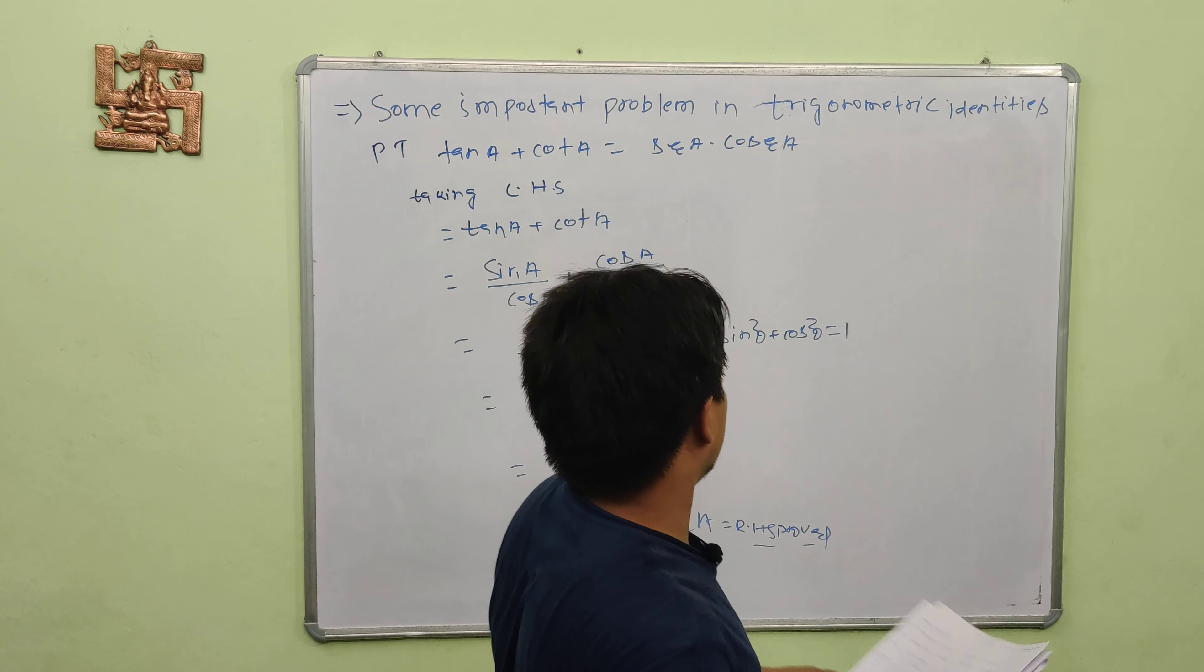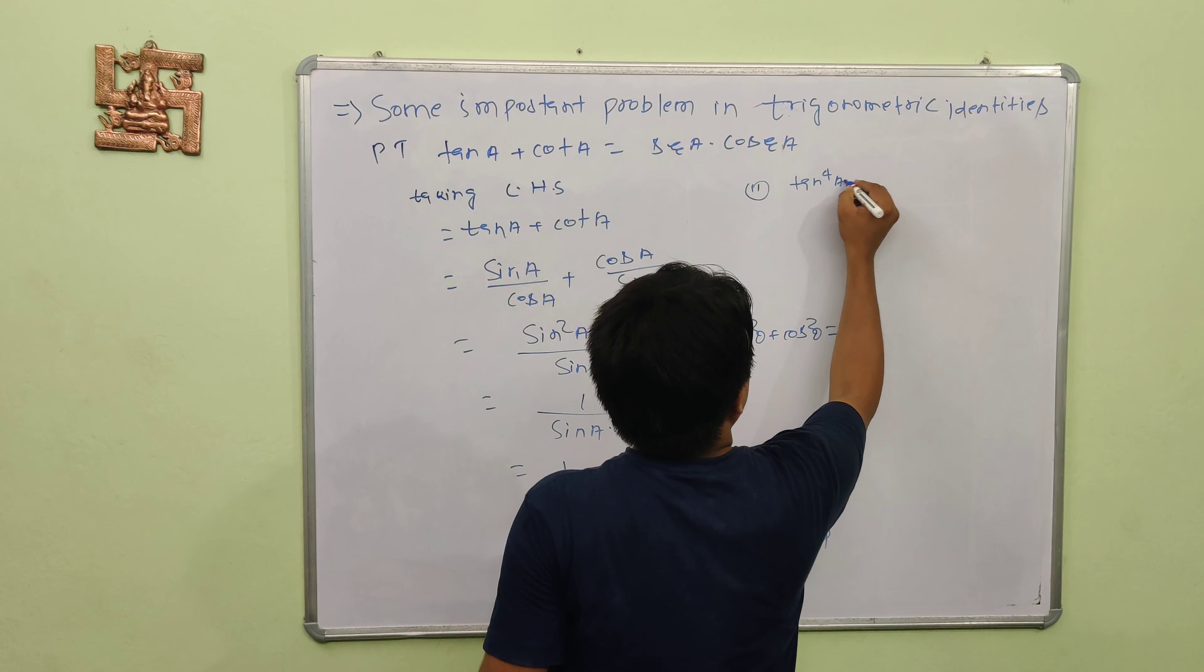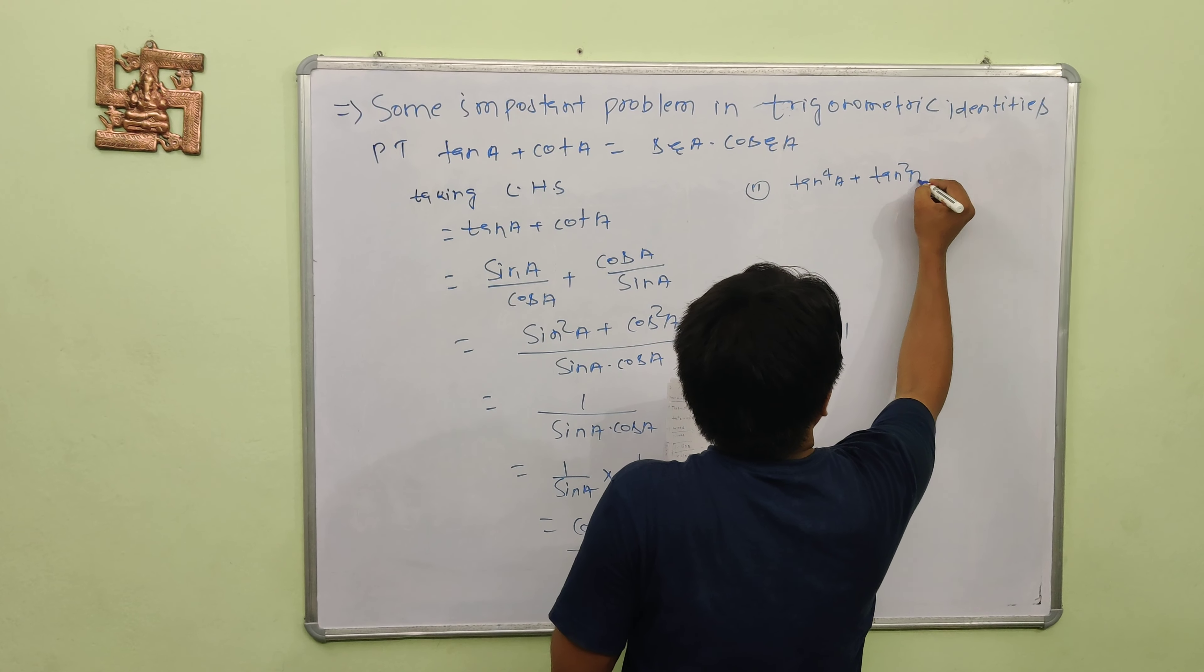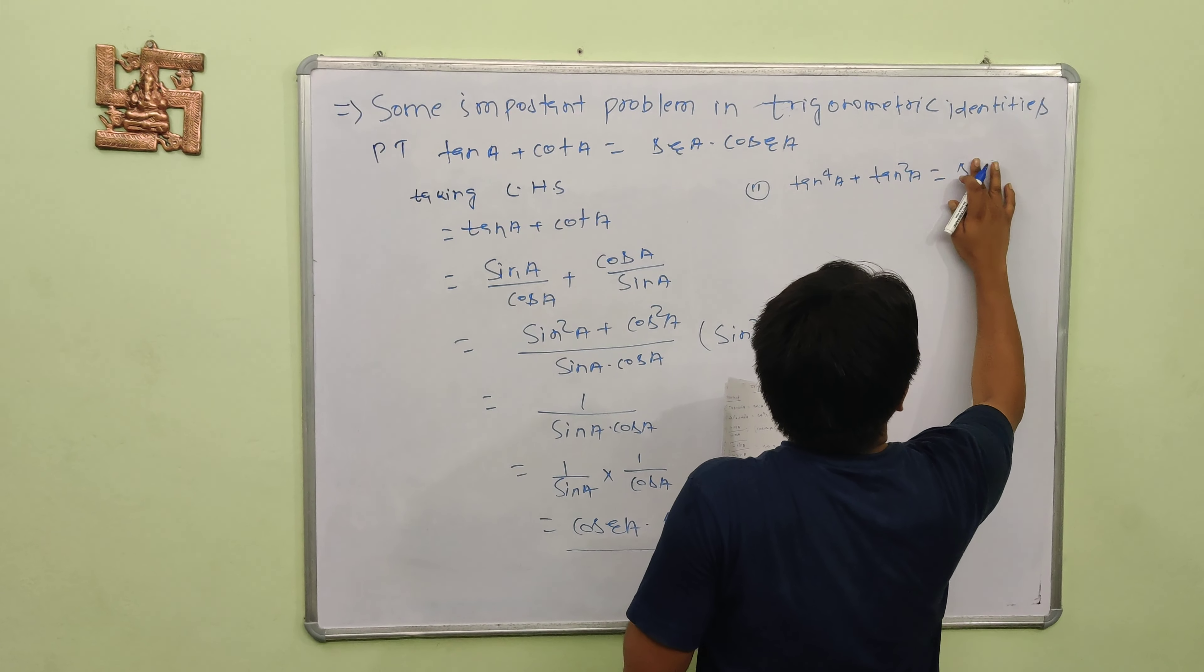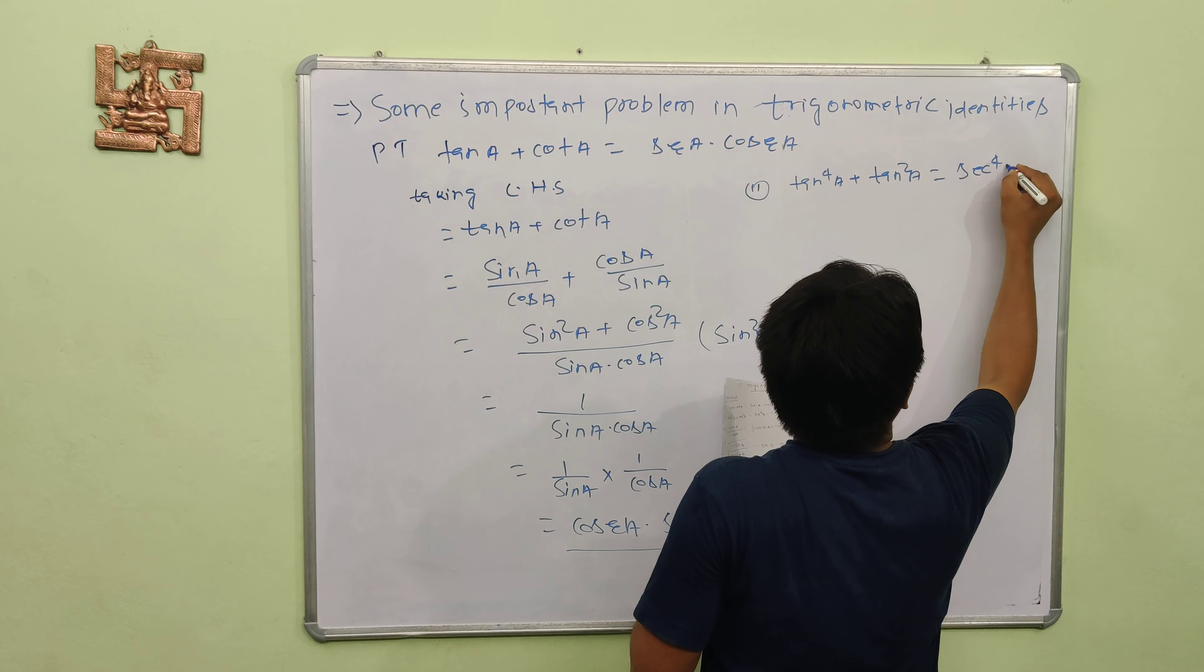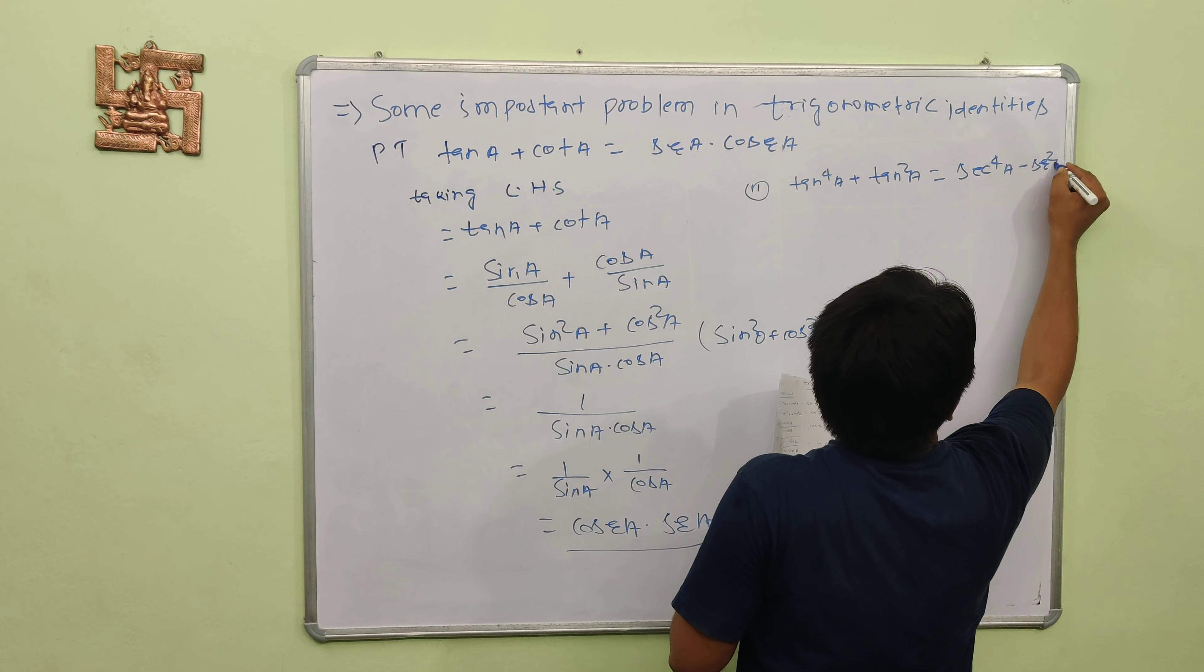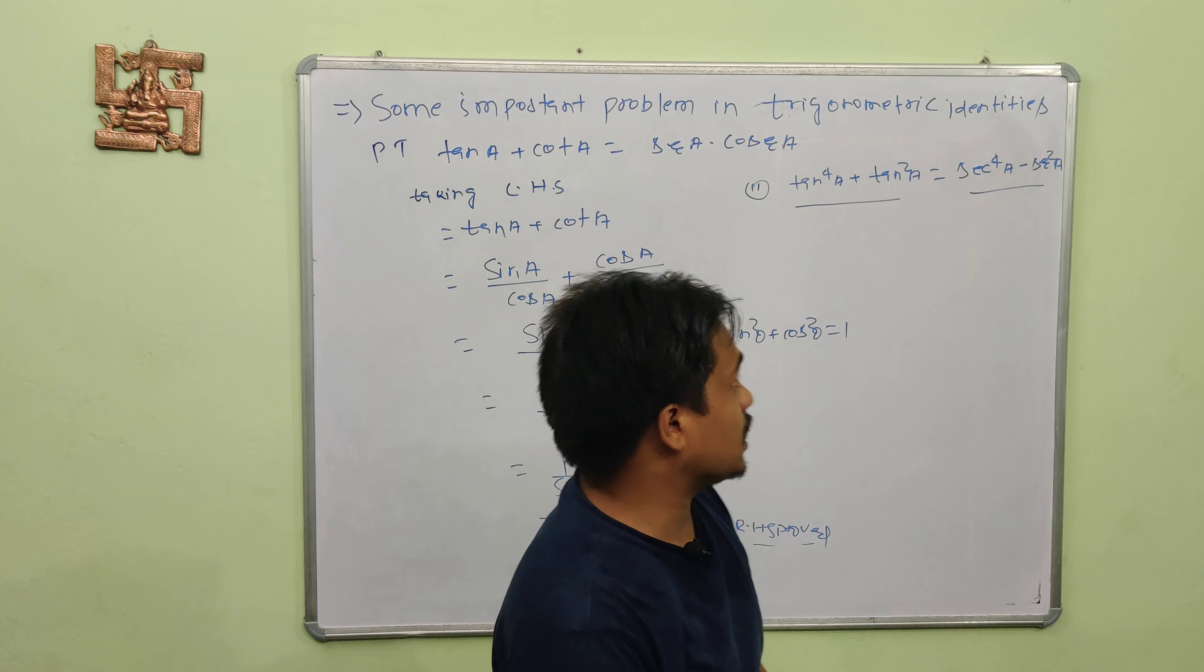Now the second question to prove: tan to the power 4A plus tan squared A equals sec to the power 4A minus sec squared A. We need to prove this equation.